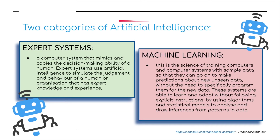Artificial intelligence can be split into two categories. Firstly, expert systems — an expert system is a computer system that mimics and copies the decision-making abilities of a human being. Expert systems use artificial intelligence to simulate the judgment and behaviour of a human or organization that has expert knowledge and experience. Also, machine learning — this is the science of training computers with sample data so that they can make predictions about new, unseen data, without the need to specifically program them for the new data. These systems learn and adapt without following explicit instructions, using algorithms and statistical models to analyze and draw inferences from patterns within data.